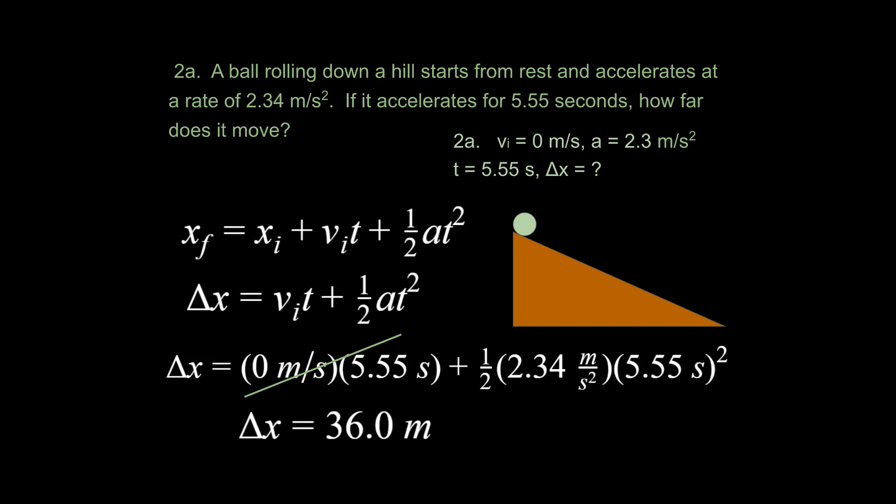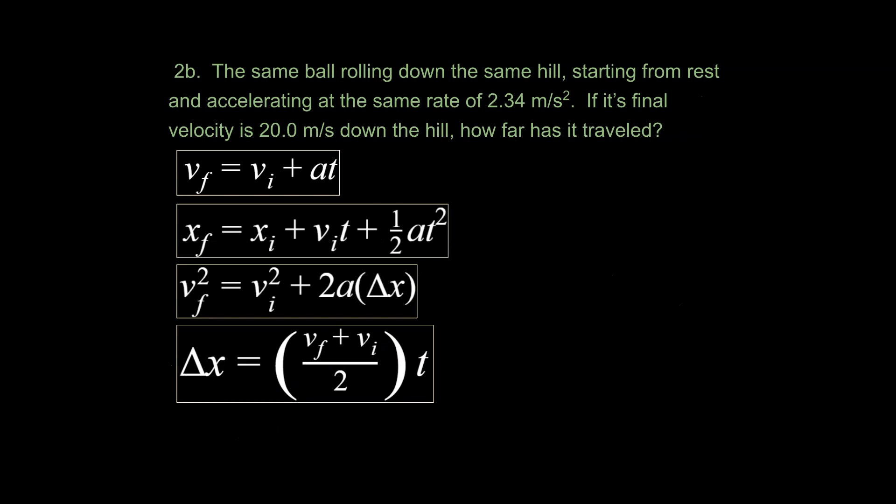Let's try one more problem and see how this goes. We're going to say, all right, we've got the same ball rolling down the same hill starting from rest, accelerating at the same rate. If its final velocity is 20 meters a second down the hill, how far has it traveled? So we go ahead and write out what we know. Notice what we know is somewhat the same, but somewhat different from what we had last problem. It's a modification of last problem. We now know its final velocity is going to be 20 meters a second. And we're looking for its delta x. So the major strategy is what are we ignoring? What variable, what physics concept are we just ignoring at this point?